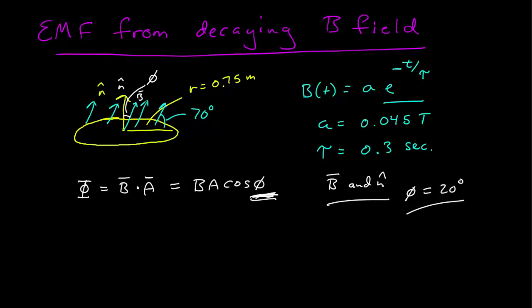So, we know what the magnetic field is, so we can put that in: A e to the minus T over tau, the area is pi r squared, then cosine of phi. So that's the flux, which is also a function of time.